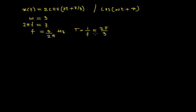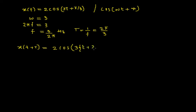Next we will consider the signal x(t + T) to test the periodicity. We need to make it equal to the given signal x(t) itself. If that is the case, the signal is periodic; otherwise it is aperiodic. So we consider 2 times cosine of 3 times (t + T), replacing t with t + T, where T = 2π/3, plus π/4.